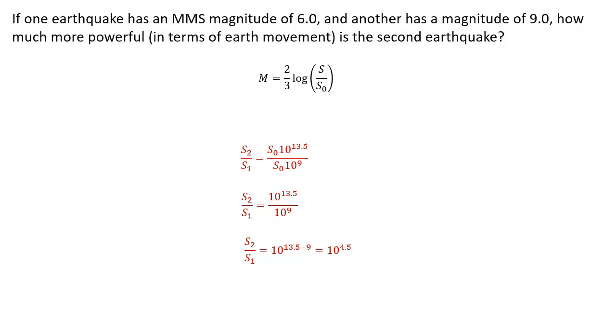And now we can simplify this. So when we divide things of like base, we can subtract the exponents, and we end up with 10 to the 4.5, or as a decimal value, about 31,622.78.